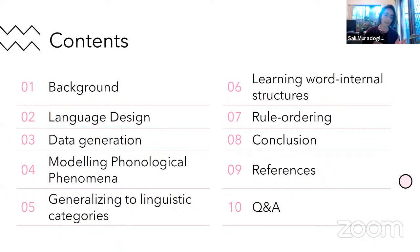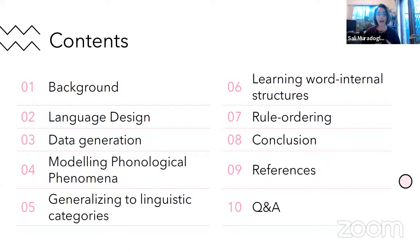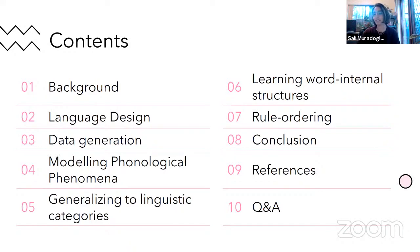To give you a brief overview: we're talking a bit about sequence-to-sequence models, then I'm going to talk about our language design because our experiments are basically working off of a constructed language. I'll go into how we actually generated the data, and then I'll talk about the experiments we run. We look at whether it's actually worth using neural nets to model phonological phenomena, whether they generalize to linguistic categories, whether they learn word internal structures like syllables, and then rule ordering — which keeps a lot of phonologists up at night. And then some concluding remarks and references.